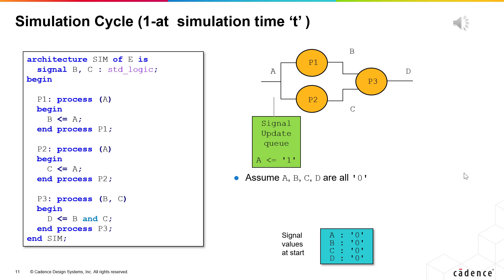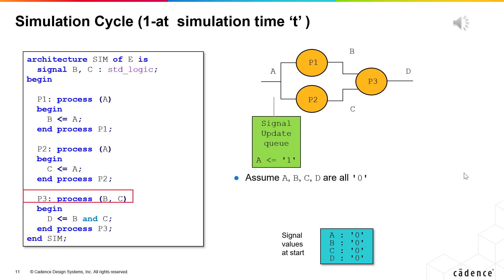We need to look at how delta cycles affect the simulation of your model by looking into a code example. We will do this by considering an architecture with three processes: P1, P2, and P3. P1 and P2 are both sensitive to signal A and represent concurrent parallel logic. P3 is sensitive to signals B and C, which are outputs from P1 and P2, and represents logic in series with the other two processes. The simulator will maintain two lists — the signal update list and the process execution list — the contents of which will change with simulator time.